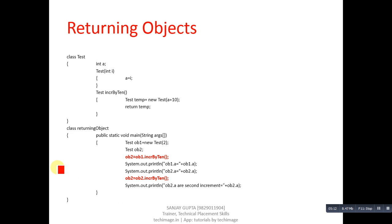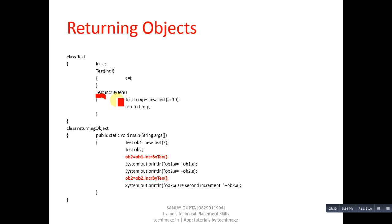Now the next method is returning an object from a method. Again the Test class has a constructor, and a method called incrementBy10 whose return type is Test — indicating that this method will return an object. Inside, a temporary object is created with new, passing a+10, and then temp is returned. Because the return type is Test, we are able to return the temp object.